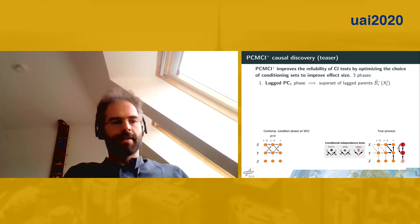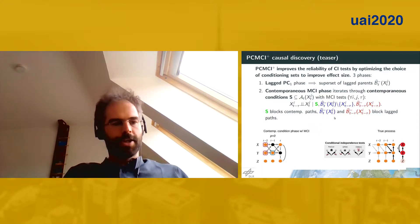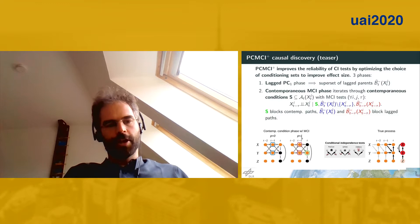We initialize the second phase, where we include all the contemporaneous links. Now we run tests iterating through contemporaneous conditions that we call MCI tests, because they condition the relation between XI and XJ on this set S, which iterates, and on the BI and BJs, which are the lagged superset of parents found in the previous step. The goal of S is to block contemporaneous paths, and the goal of the Bs is to block lagged paths. As an animation here, for this link we condition on the blue parents, which increases effect size. For higher orders, we condition also on contemporaneous parents and on the lag parents, so we would remove this false link.